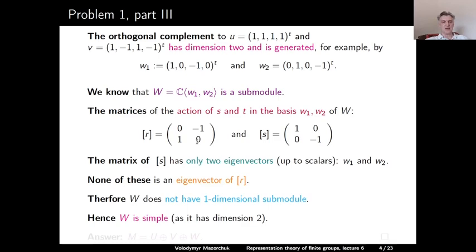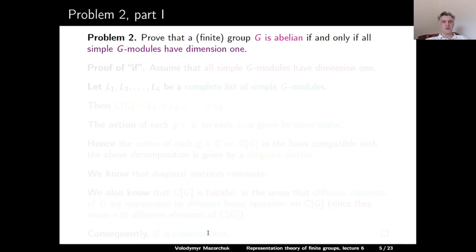The answer to Problem 1 is that the module M decomposes as a direct sum of the submodules U, V, and W. Problem 2: Prove that a finite group G is abelian if and only if all simple G-modules have dimension 1.